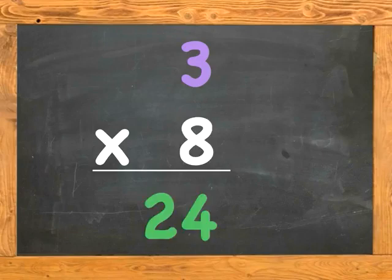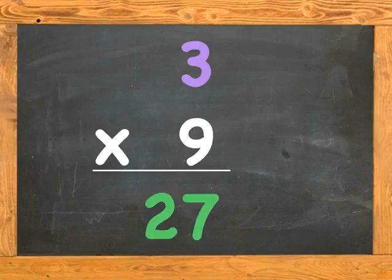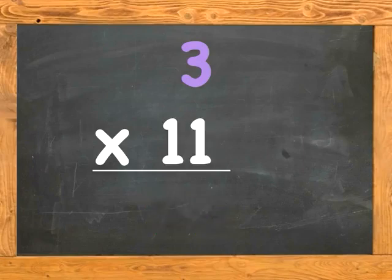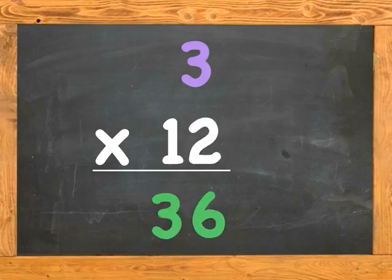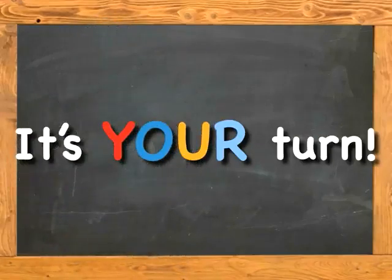3 times 8 is 24, 3 times 9 is 27, 3 times 10 is 30, 3 times 11 is 33, 3 times 12 is 36. Get ready now!